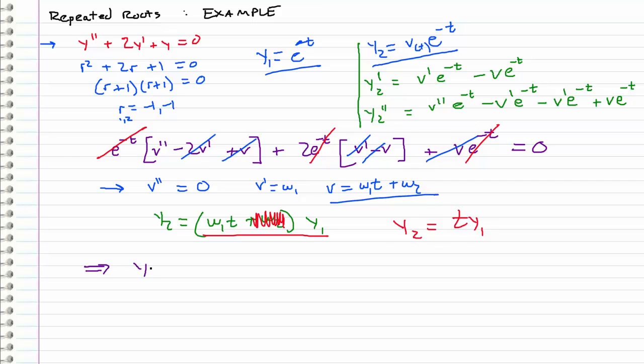So when we express our final solution, it's just going to be linear combinations of our two solutions like this. And that'll give us c1 times e to the negative t plus c2 times t e to the negative t.